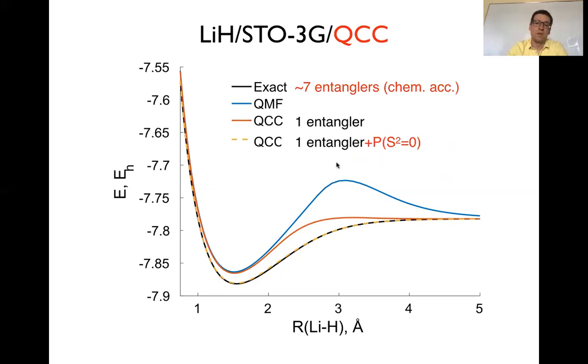But it turns out that if we add just one extra entangler on top of the mean field, we switch to the qubit couple cluster theory. Then we can get to the chemical accuracy. So the way it works is, again, black is exact. The blue is a mean field without any constraints. And if we add one entangler on top of the qubit mean field, so the blue curve becomes a red curve, still far from the black one. But if on top of one entangler, we add also projection to the singlet spin, we get into chemical accuracy. And the impressive part of this result is that in order to get to the exact answer without any projection with chemical accuracy, you need seven entanglers within the qubit coupled cluster theory. And here with projection, we just do it in one entangler.